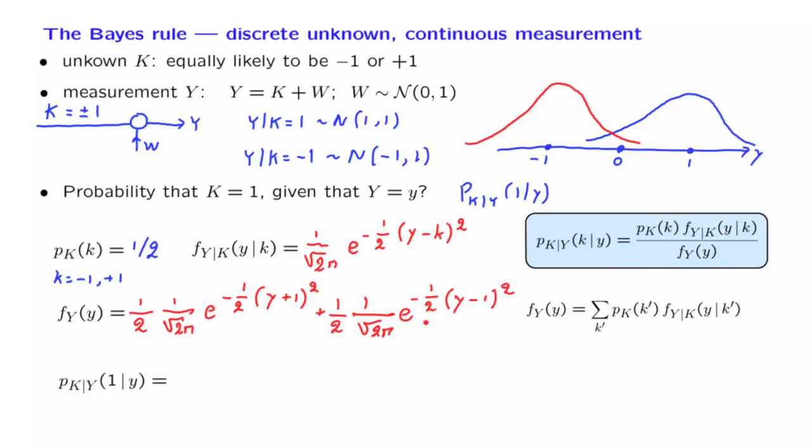And we can just apply the formula and carry out a fair amount of algebra. There are some very nice simplifications that happen along the way. And we end up with an answer that has the following form. It's 1 divided by 1 plus e to the minus 2Y. And this gives us the probability that a 1 was sent.